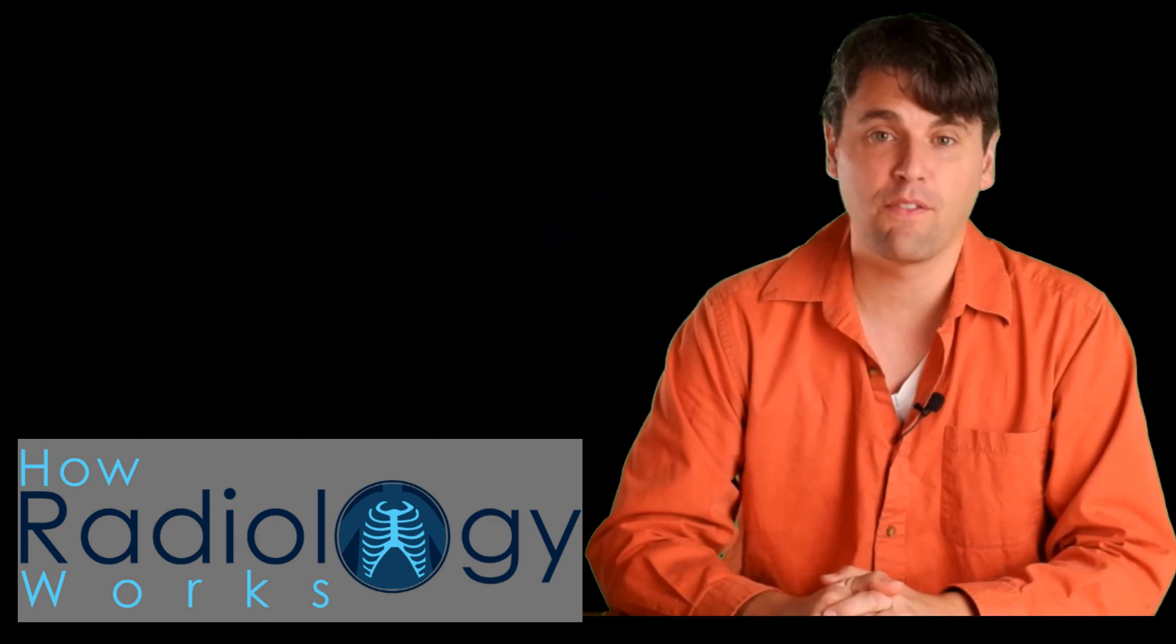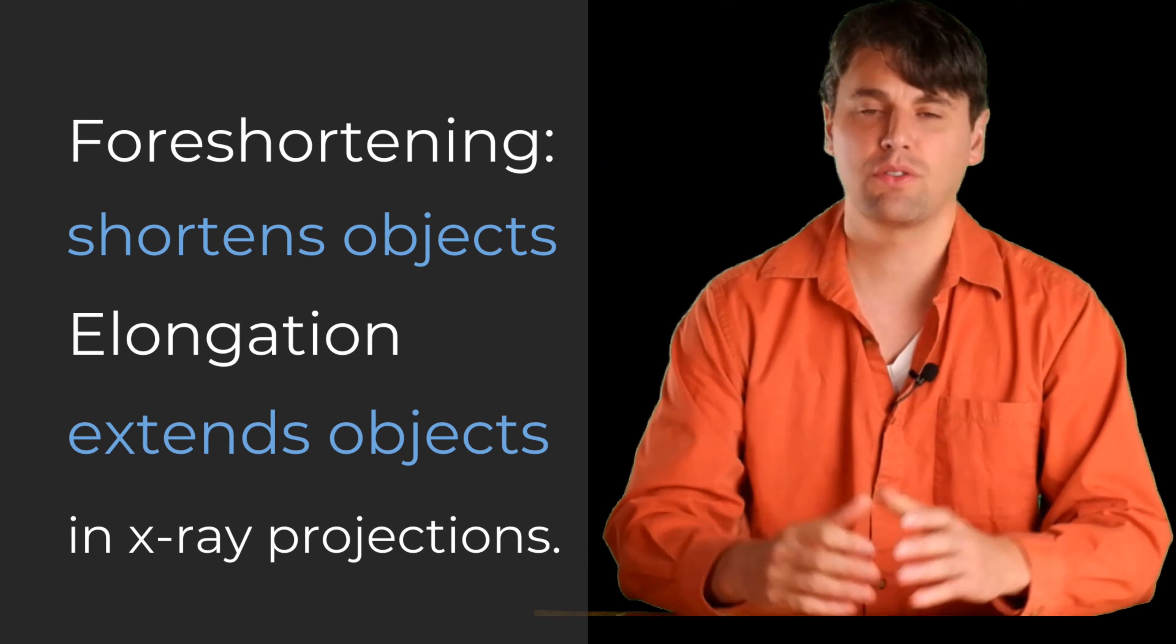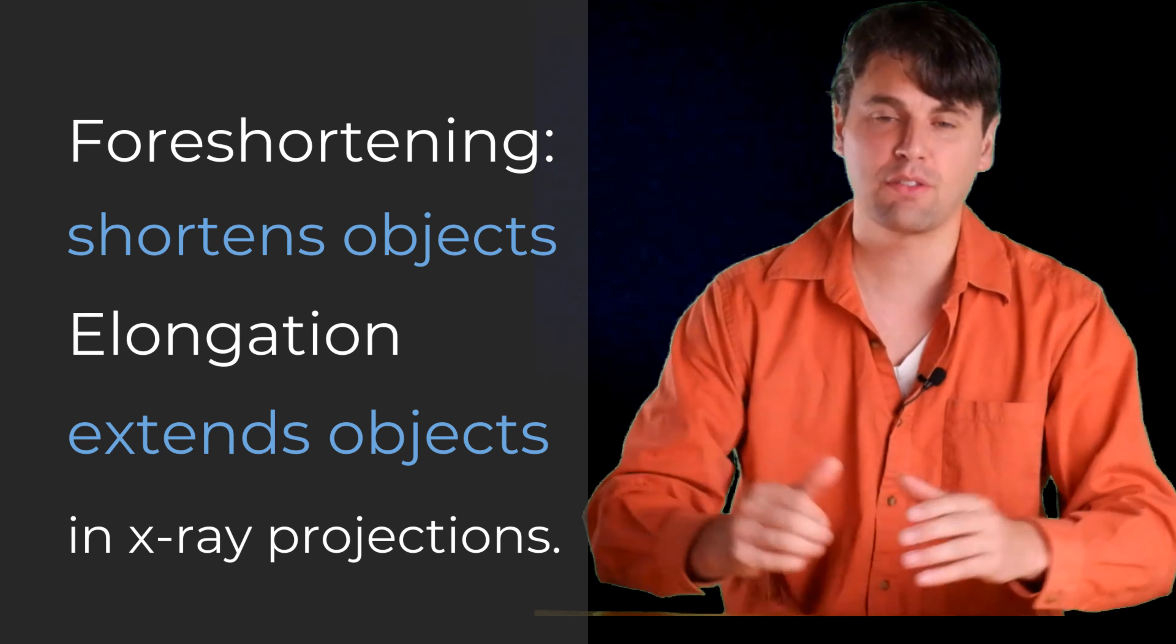Today at How Radiology Works, we're going to be learning about foreshortening and elongation, which are both due to the geometry of x-ray imaging and which change the appearance of bones in your x-ray images.